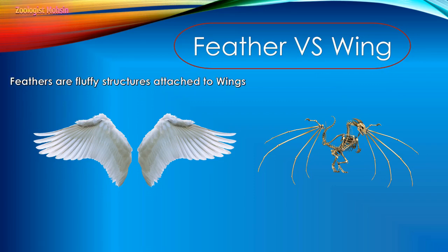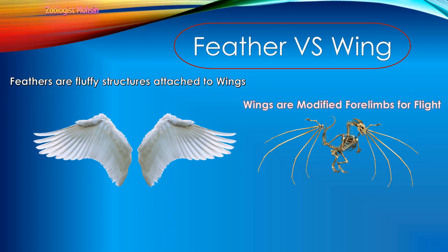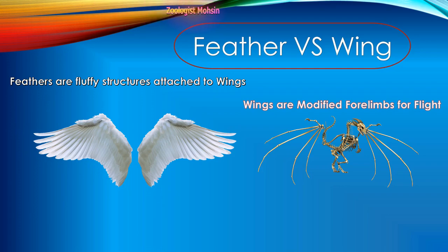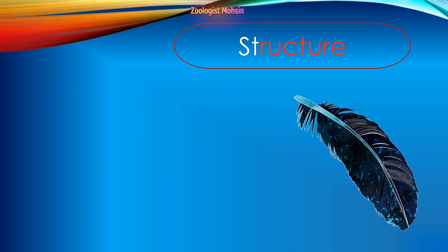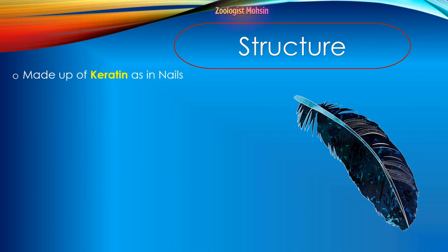Difference between feather and wing: Feathers are fluffy structures attached to wings, made up of keratin. Wings are modified forelimbs for flight, made of bones and muscles. You must be clear in your mind that feathers are the fluffy structures, while bones and muscles — which are basically forelimbs — are wings. Next: structure of a feather.